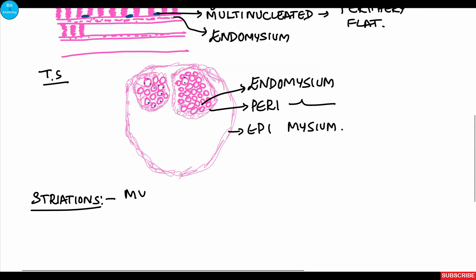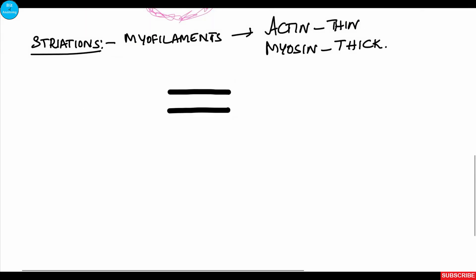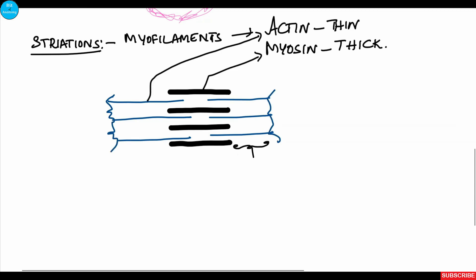The striations appear because of the presence of myofilaments—actin and myosin—and their regular arrangement. Myosin is a thick filament present in the center, whereas actin is the thin filament that intervenes between the myosin filaments. There is a Z line on either side.